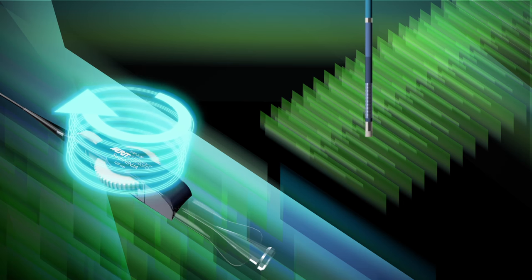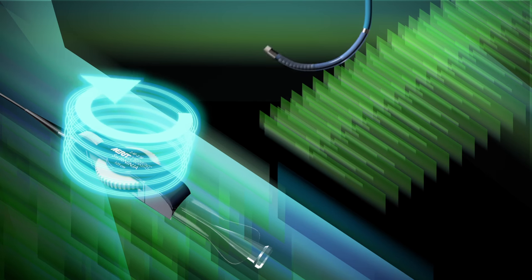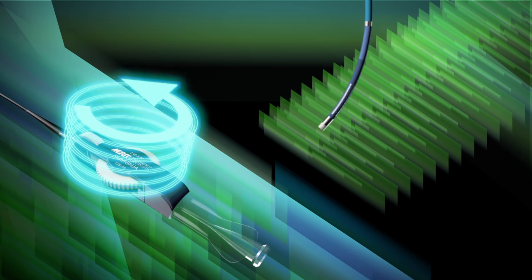Turning the steering dial will allow the catheter tip to articulate up to 180 degrees in opposing directions.